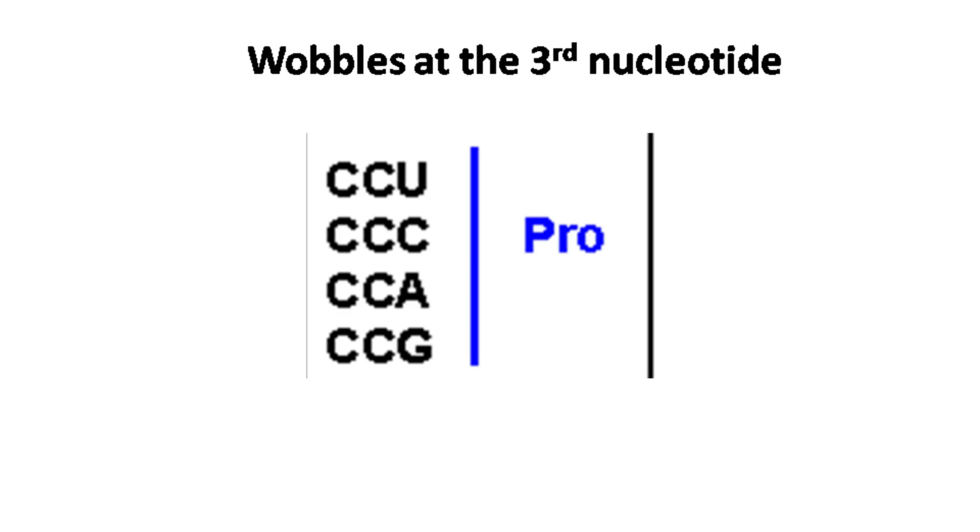The first two bases of the genetic code are the same, while at the third position, the base may wobble.